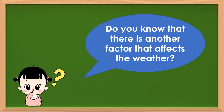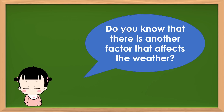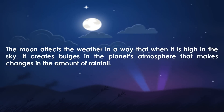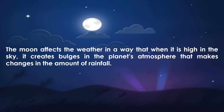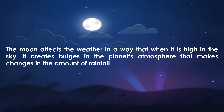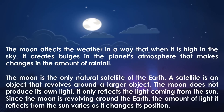Grade 5 learners, do you know that there is another factor that affects the weather? The moon affects the weather in a way that when it is high in the sky, it creates bulges in the planet's atmosphere that makes changes in the amount of rainfall. The moon is the only natural satellite of the Earth.